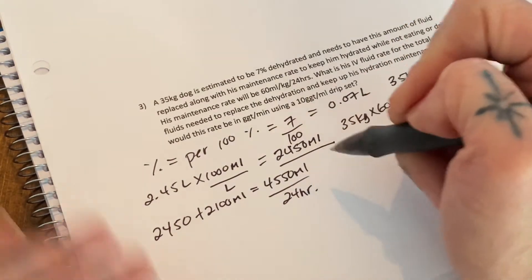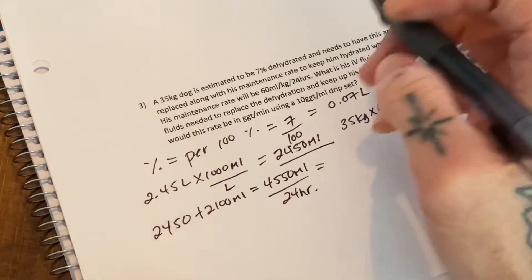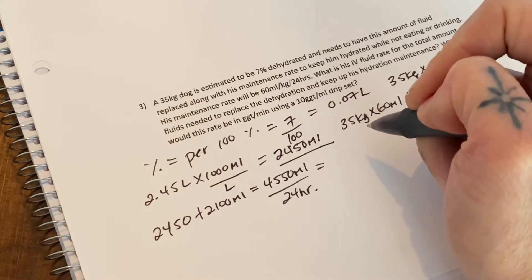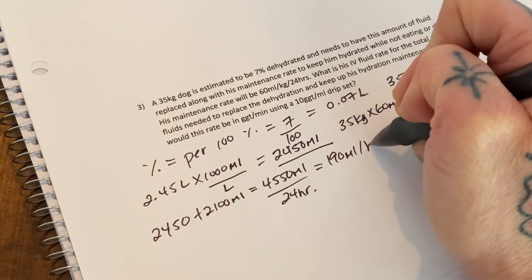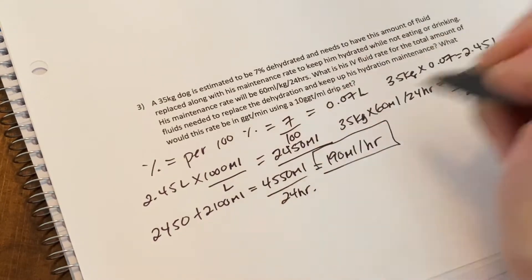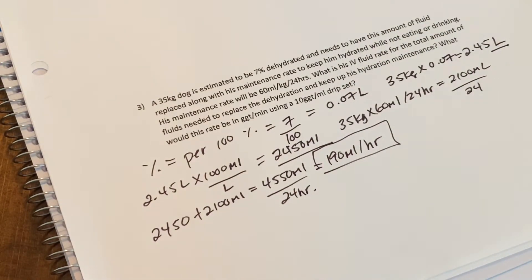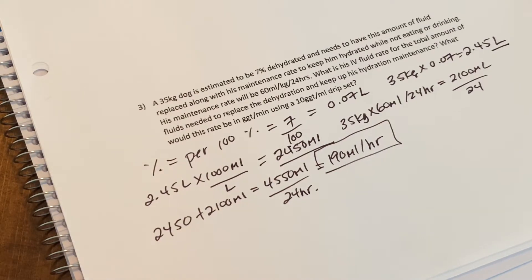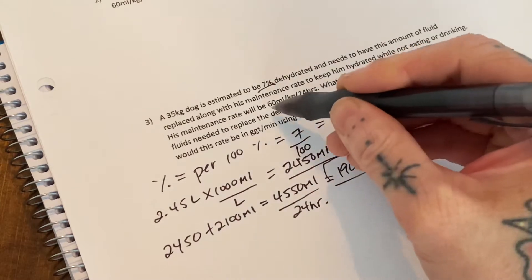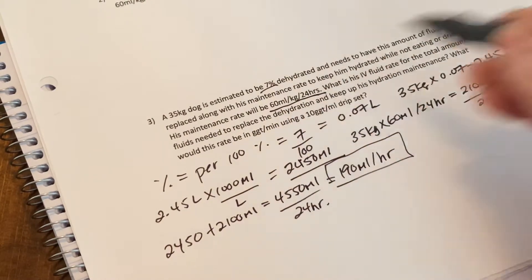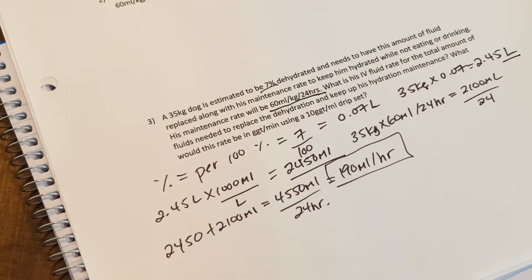So that's what we need to do for the total fluid rate. This number divided by 24 equals 189.58 but we're just going to say 190 mils per hour. So now we have the fluid rate that this dog needs to be on over the next 24 hours that will replace this seven percent dehydration and keep him hydrated at this rate here which is a normal maintenance fluid rate.